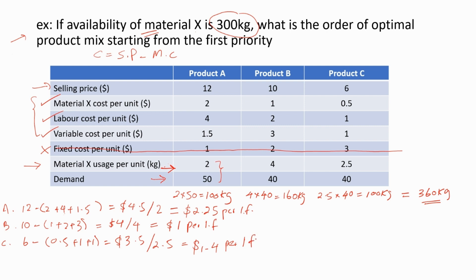Ranking by contribution per limiting factor: product A is highest at $2.25, product C is second at $1.40, and product B is third at $1.00. Therefore, the order of the optimal product mix starting from the first priority is: product A, product C, product B. I hope you now understand the concept of limiting factor analysis. We use this analysis to identify limiting factors and calculate the profit-maximizing product mix. Thank you for watching — see you in the next video.